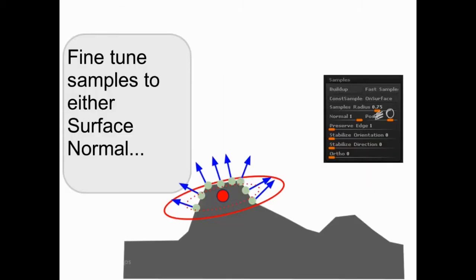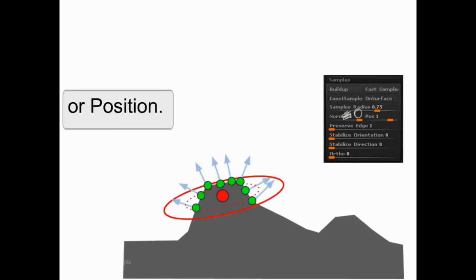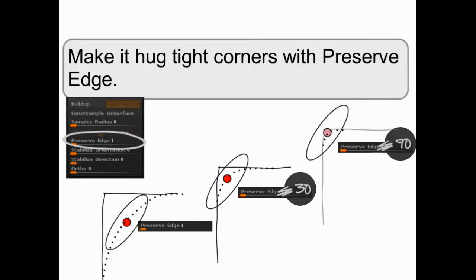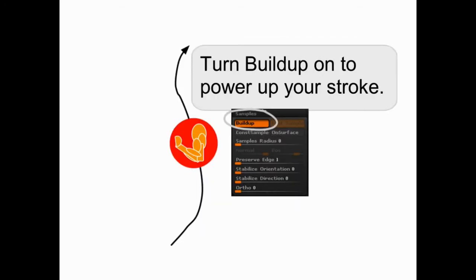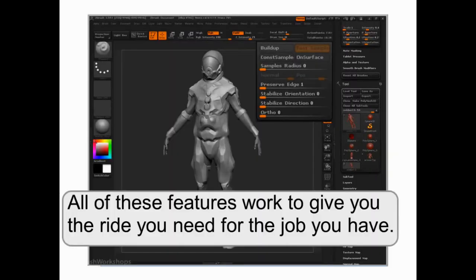You can also fine tune samples to prefer either the surface normal or the position of the vertices. You can even make it hug tight corners with Preserve Edge. This is used to great effect in all of the polish brushes. The last feature, Build Up, can be used to really amp up your brush stroke. So let's take a look at these features inside of ZBrush.